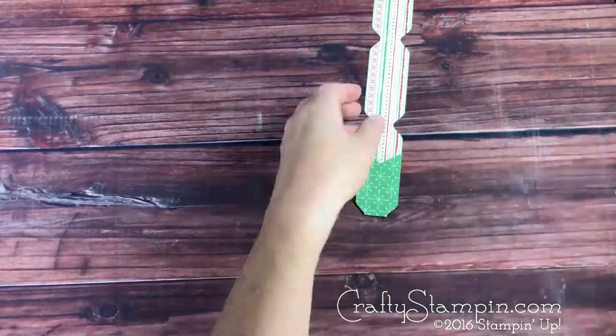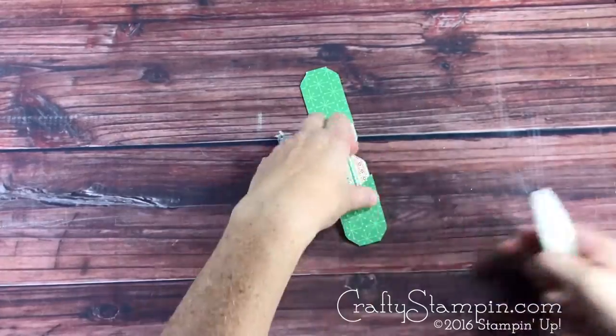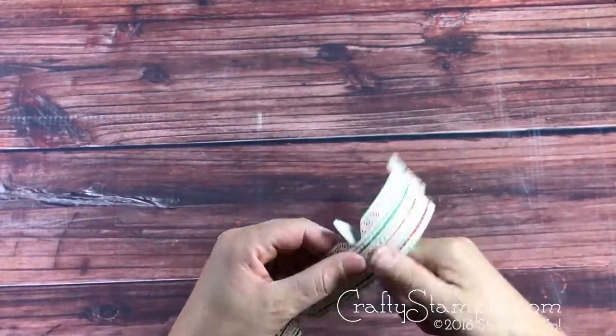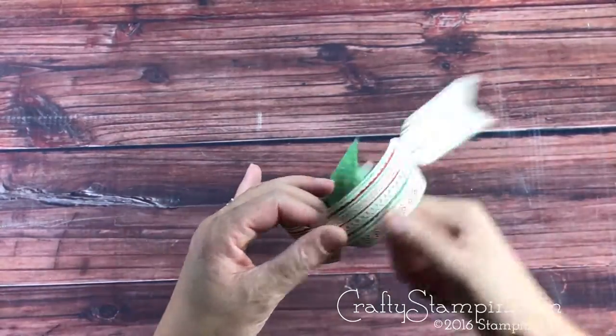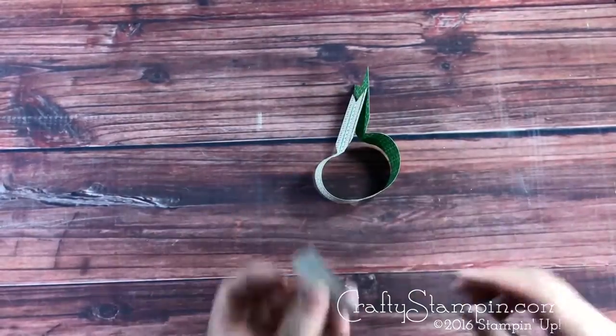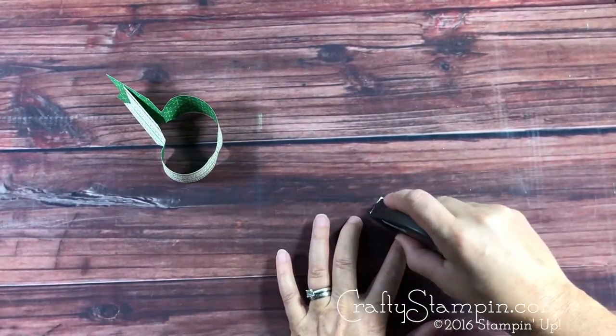Fold the ends in half, lining them up with the other end of the bow. Then use your bone folder to create the curl for the bow. Take a piece of scrap paper and some strong adhesive.